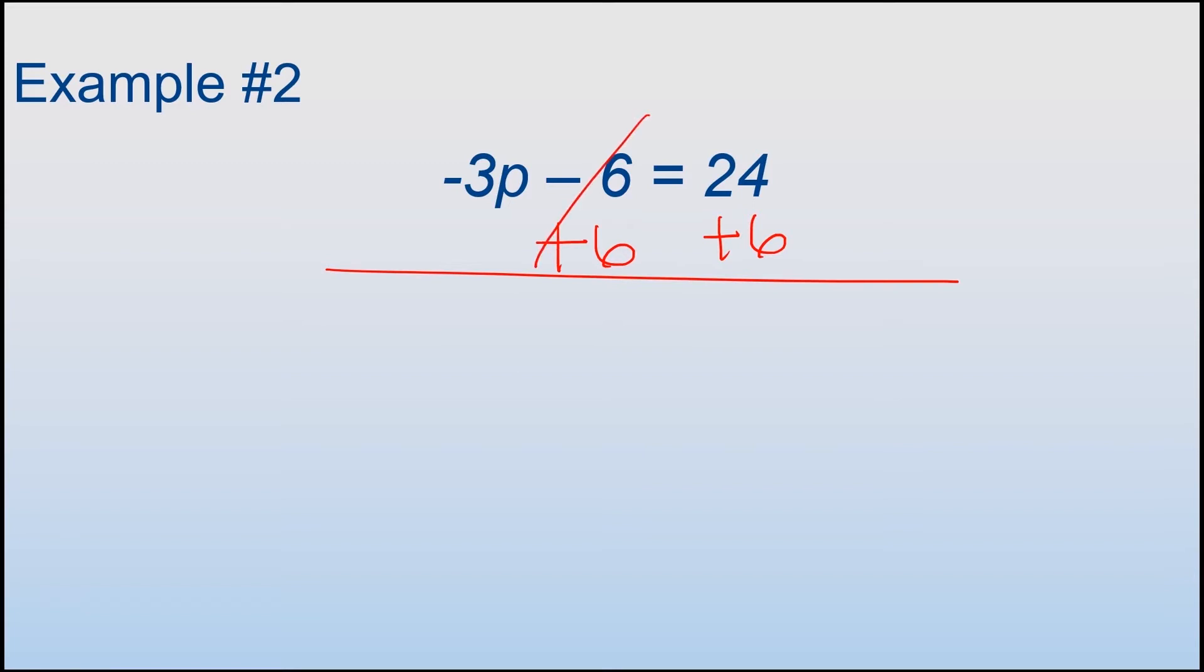This cancels out, so the only thing that's left on this side is -3P equals 30. Now I'm gonna divide both sides by -3. This side is left with P because the 3 and the negative part, that part gets crossed out because they cancel each other out, so I'm only left with the P over here. Equals stays the same, and then I have 30 divided by -3, and that's -10.